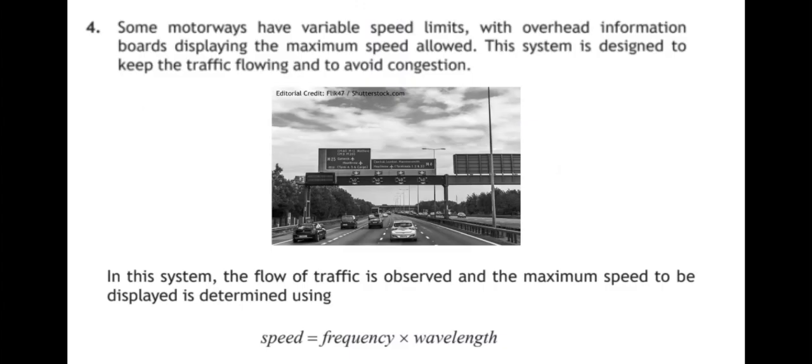We're going to start with this open-ended question which tells us that some motorways have variable speed limits with overhead information boards displaying the maximum speed allowed. This system is designed to keep the traffic flowing and to avoid congestion. In this system, the flow of traffic is observed and the maximum speed to be displayed is determined using speed equals frequency times wavelength.